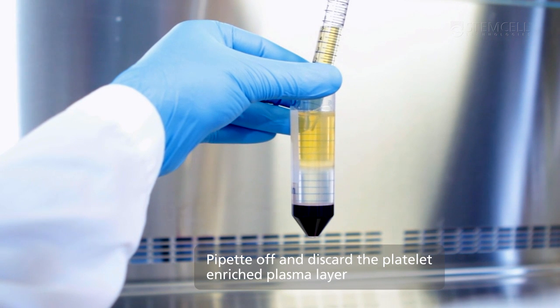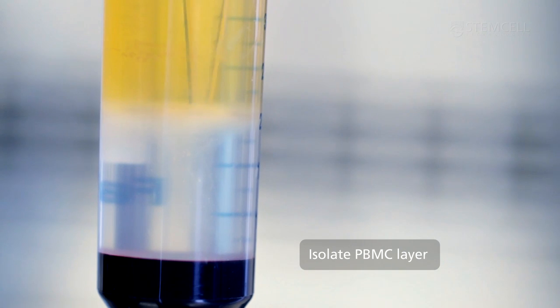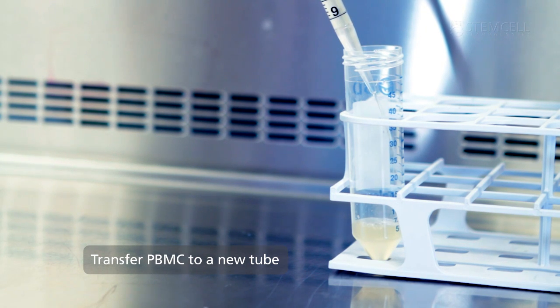Pipette off and discard most of the yellow colored platelet enriched plasma layer before isolating the mononuclear cells. Please see your density gradient medium product information sheet or our technical video for more details on this procedure.